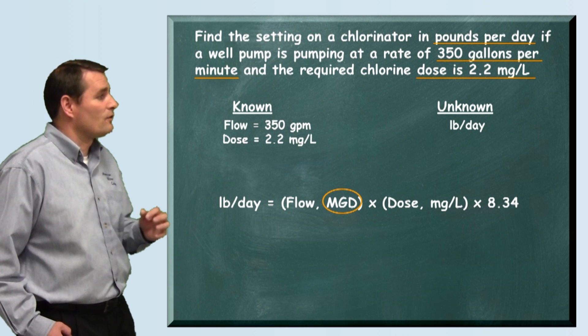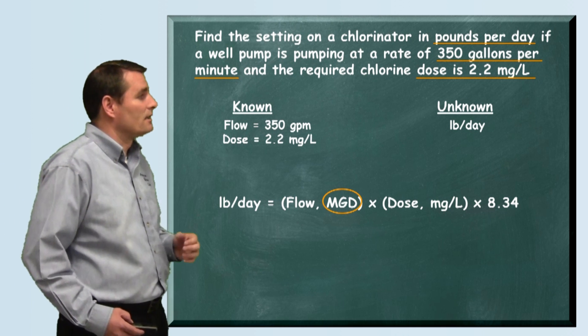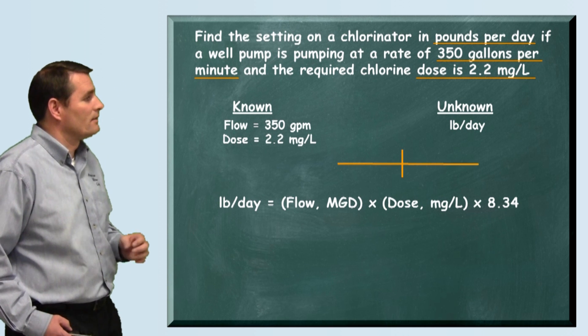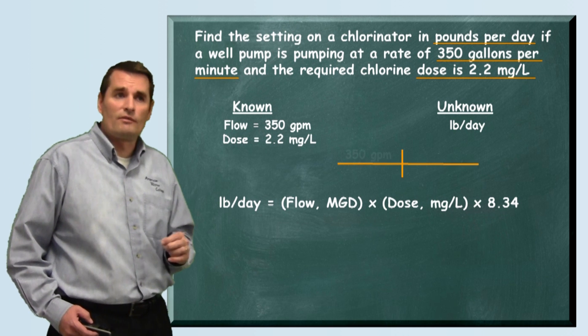So you notice we're looking for our flow in MGD. Let's convert that 350 gallons per minute to MGD. We do this by doing a quick unit conversion.